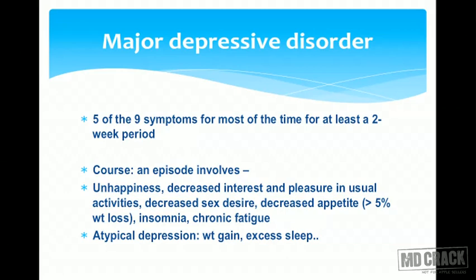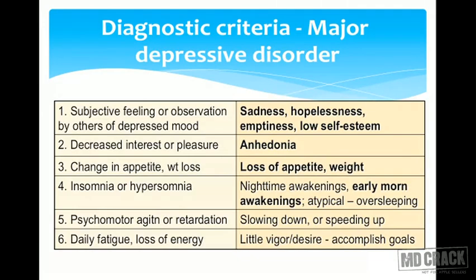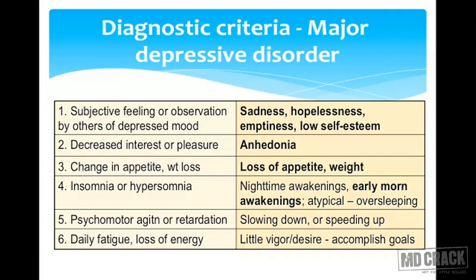There is also a type called atypical depression, in which you get weight gain and excess sleep — hypersomnia — which is the opposite pattern. Coming to the diagnostic criteria for major depressive disorder according to the DSM, the nine symptoms include: subjective or observed depressed mood with sadness, hopelessness, emptiness, and low self-esteem; decreased interest or pleasure in normally pleasurable things, called anhedonia; and change in appetite with weight loss. The usual presentation is insomnia, while atypical depression shows hypersomnia.